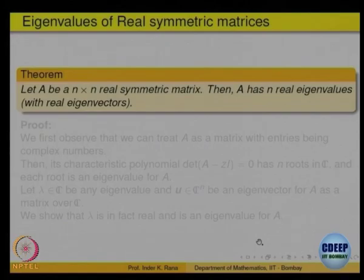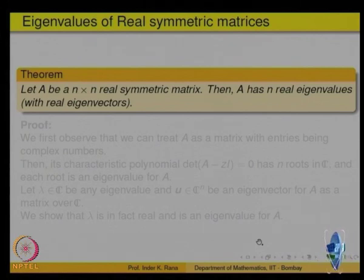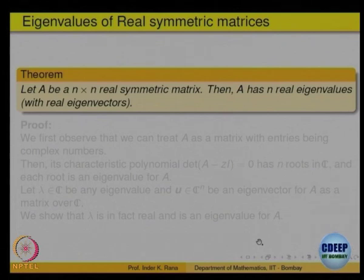Now the problem comes. We were all along lucky in the earlier example, where we saw that eigenvalue lambda equal to 1 had nullity 1, so we could not find enough eigenvectors — that matrix was not diagonalizable.